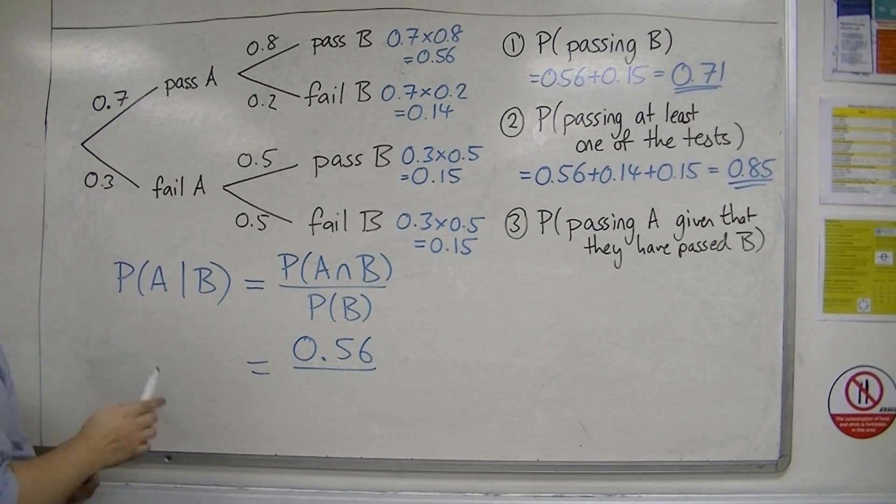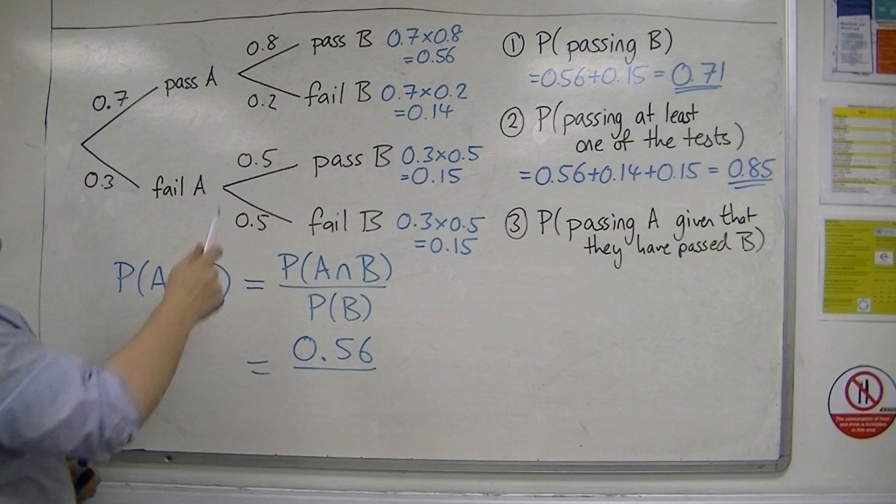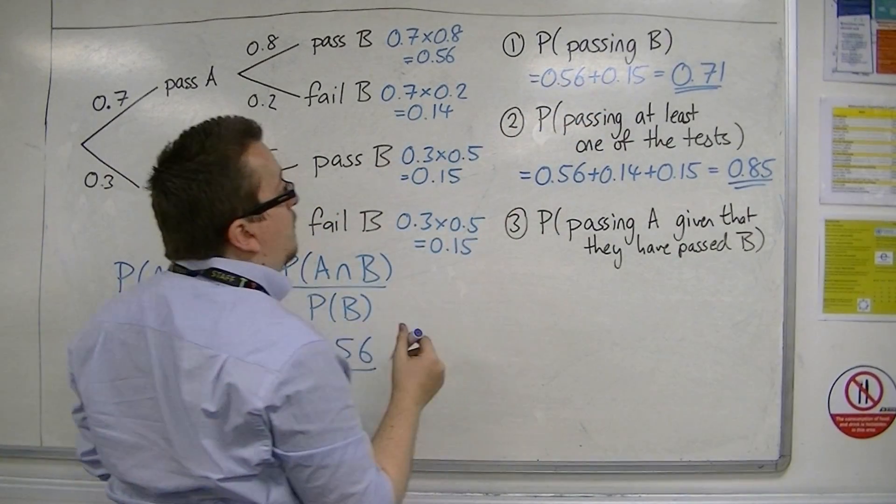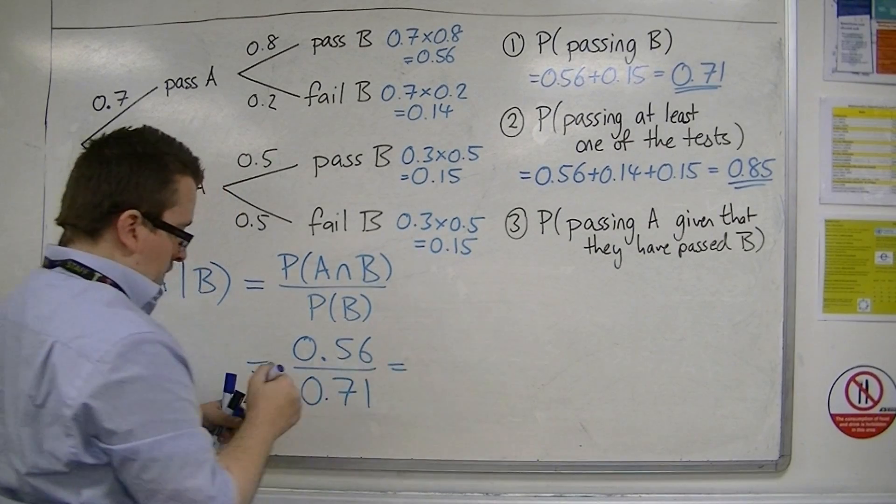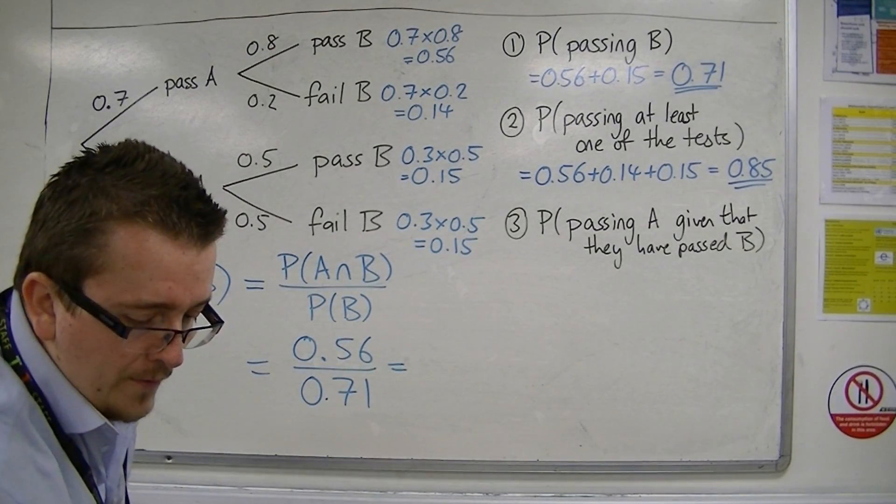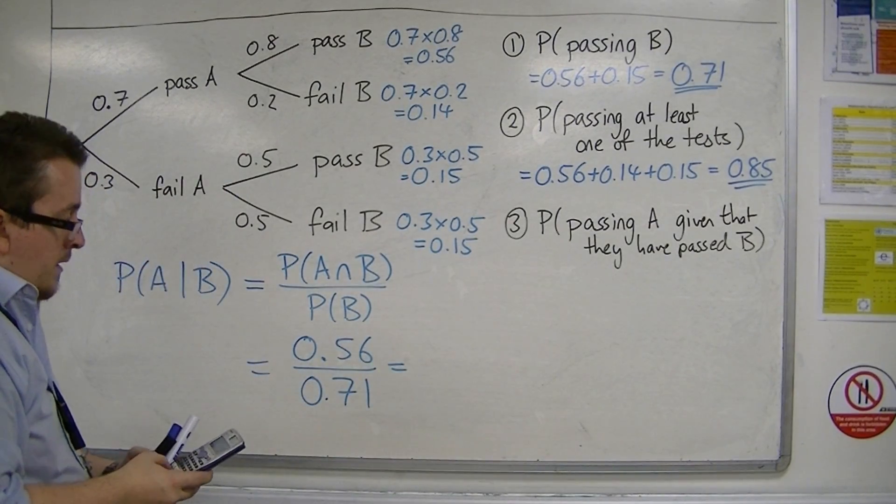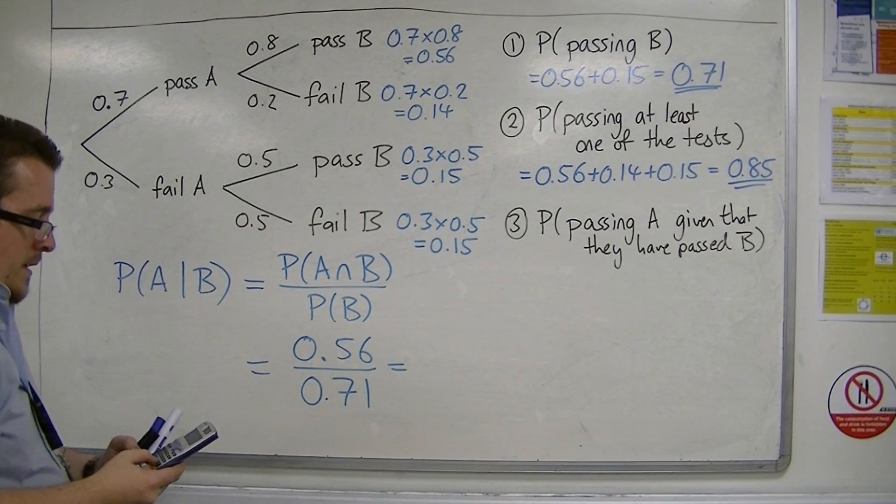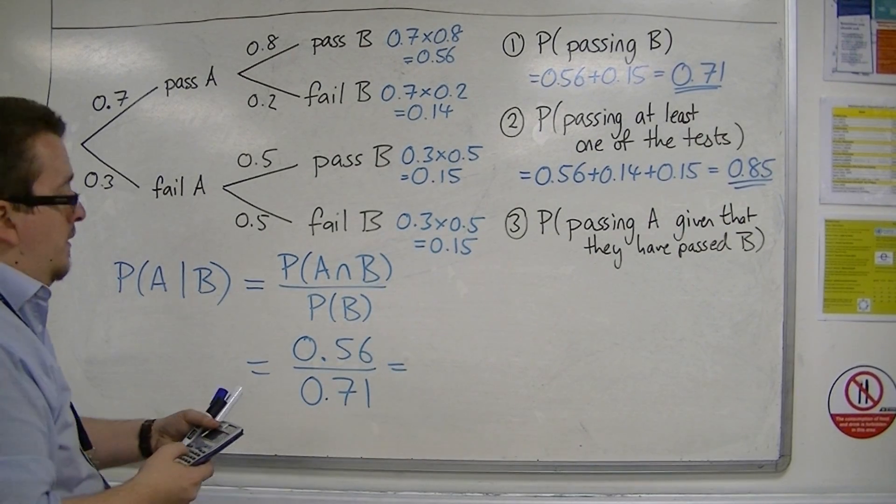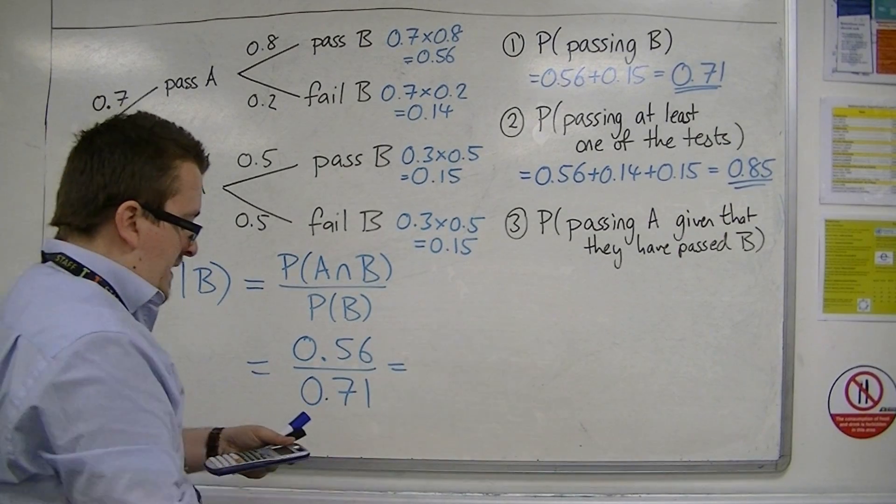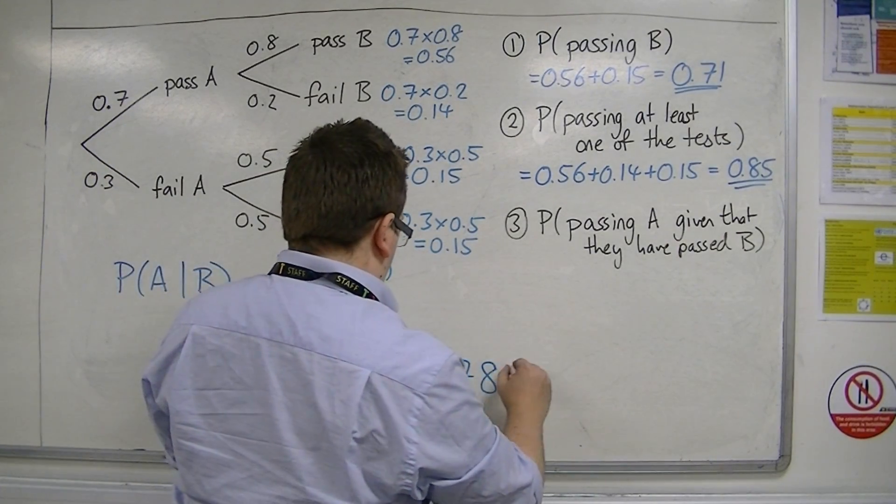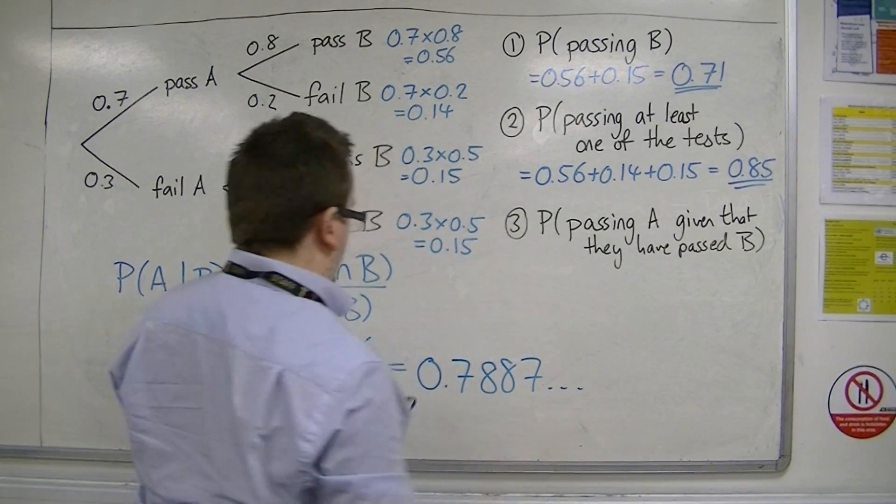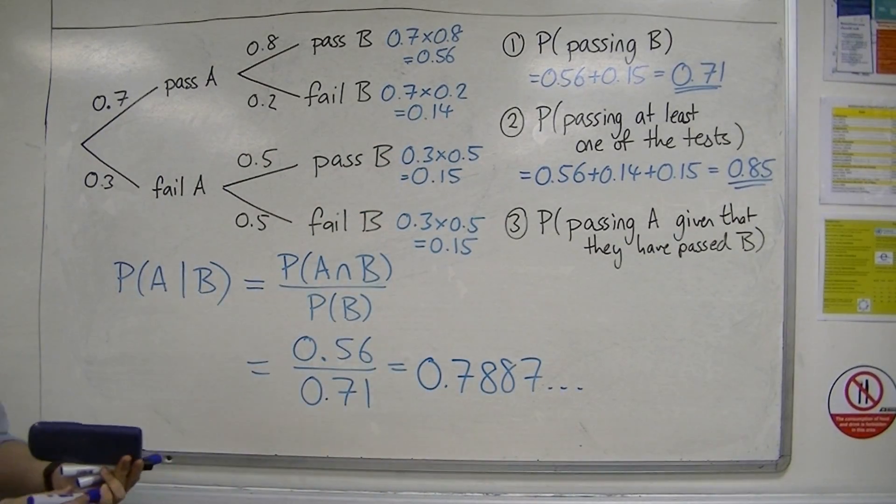We're dividing by the probability of passing B, which we calculated as 0.71. So 0.56 divided by 0.71 is 56 over 71, which is 0.7887, or exactly 56 over 71.